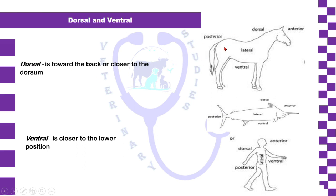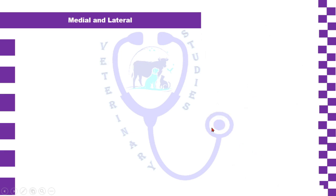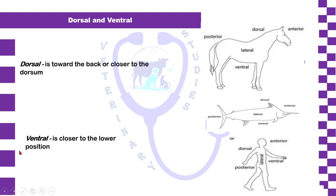Dorsal means toward the back or closer to the dorsal part of an animal. As seen in the pictures on the slide, the dorsal part of an animal is related to the vertebral column. Ventral means closer to the lower position, and the picture shows that the ventral part of an animal represents toward the breast bone or sternum.